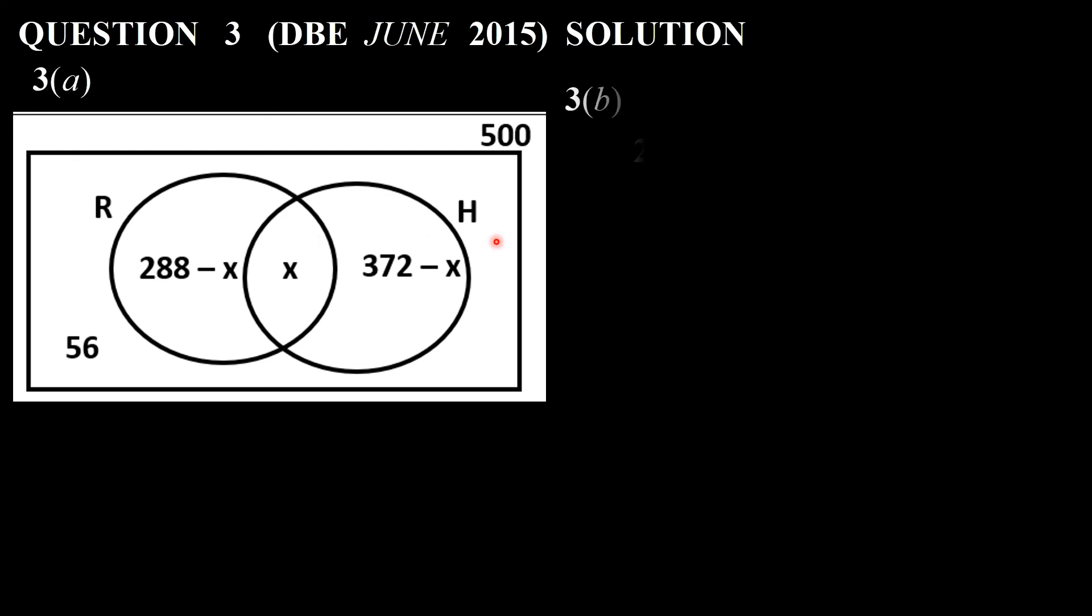And let's look at the first question there. We must find the value of x. How do we do that? We have 28 minus x plus x plus 32 minus x plus 56. All of that must be equal to the 500. We do a little bit of calculation. x is 216.